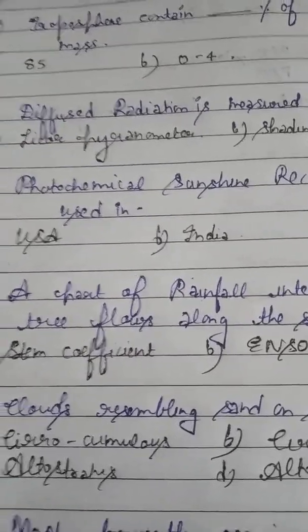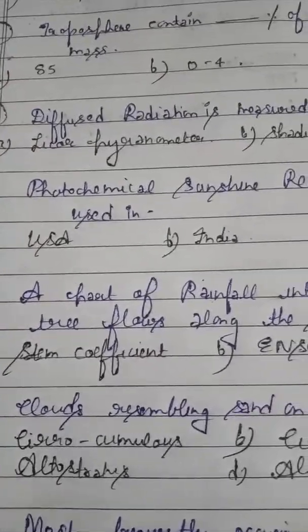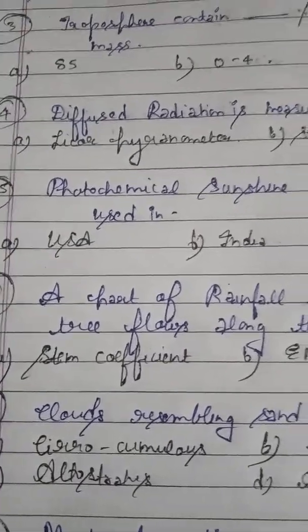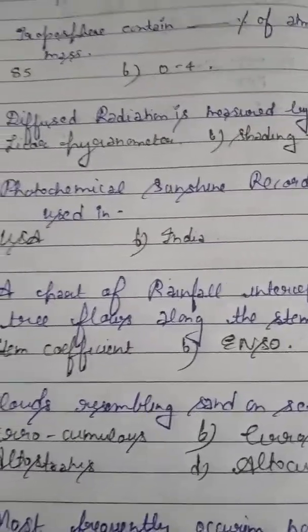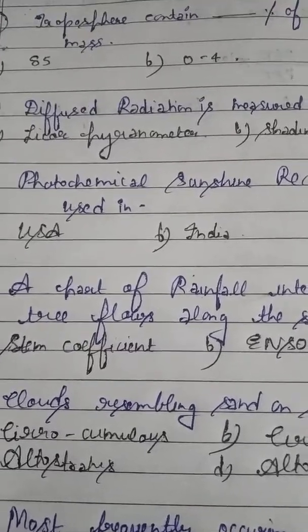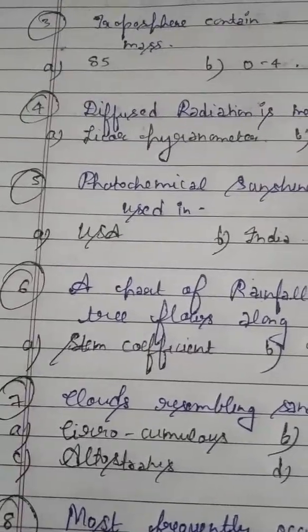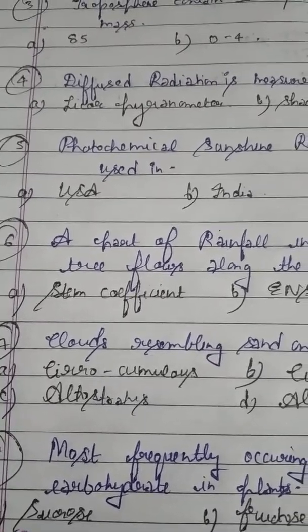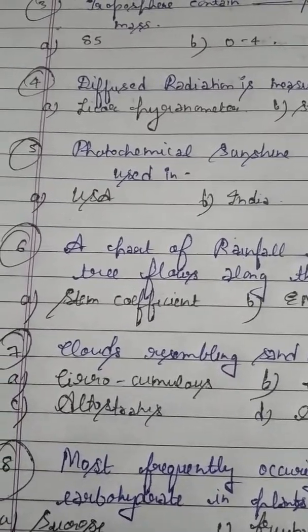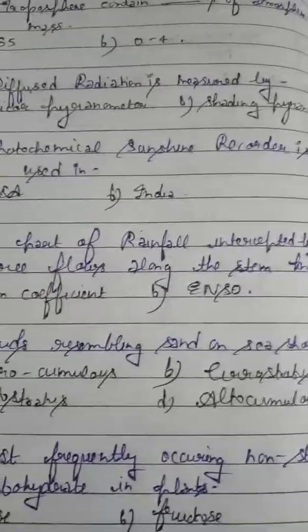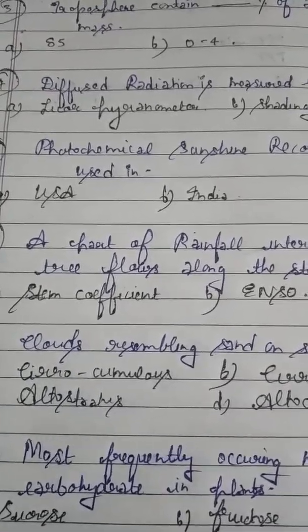Water vapor is 0 to 4% — please remember water vapor. And please remember Argon — it is very commonly asked. Argon by volume is 0.93%, but in this question Argon by weight is asked. Argon by weight is 1.2%. Also remember: nitrogen by weight is 75.5%, oxygen by weight is 23%, and carbon dioxide by weight is 0.04%.